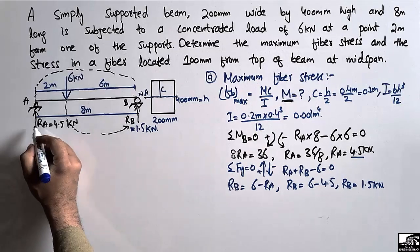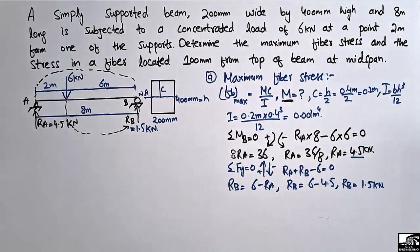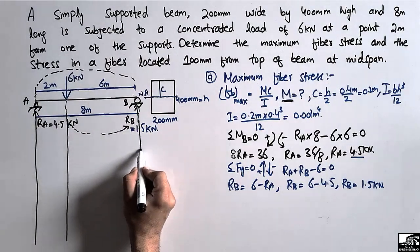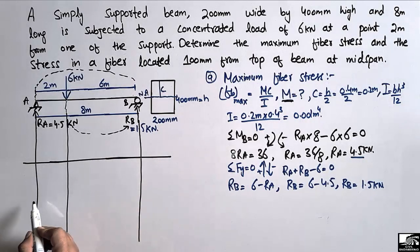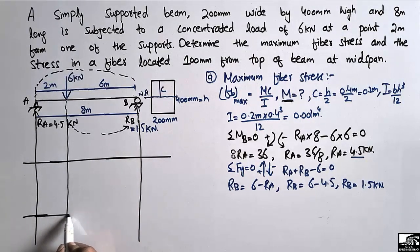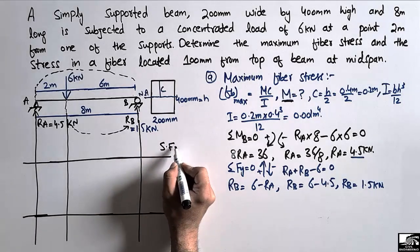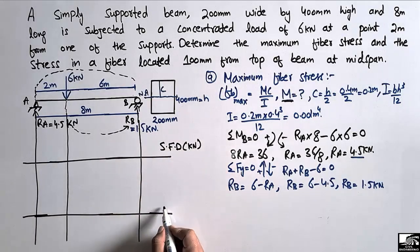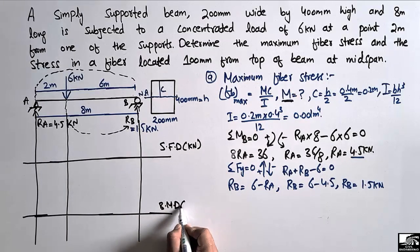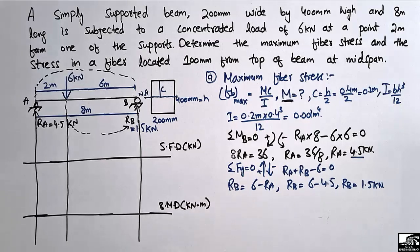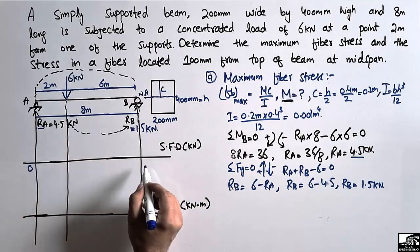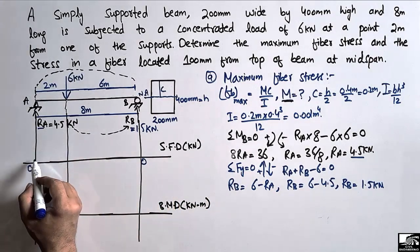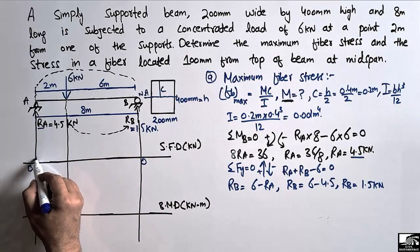Now we will draw the shear force and bending moment diagram. We draw the reference lines — one for the shear force diagram in kilonewton units and one for the bending moment diagram in kilonewton meter units. Starting the shear force diagram: R_A of 4.5 kilonewton acts upward, so we plot from zero up to 4.5 kilonewton.